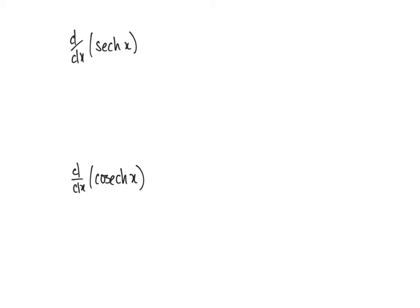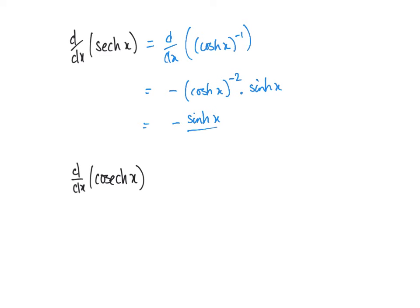Moving on, we can use similar methods as we do with trigonometry to differentiate sech and csch. If we think of sech as d/dx of cosh x to the power of minus one, then using the chain rule, that becomes minus one times cosh x to the power of negative two, multiplied by the differential of cosh x. When we differentiate cosh x we get sinh x, so that ends up as minus sinh x over cosh squared x. We can write that as minus tanh x times sech x.